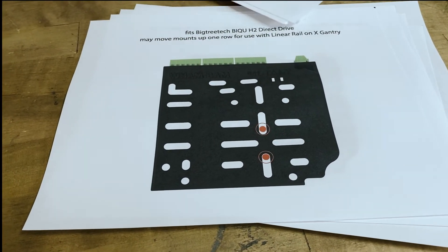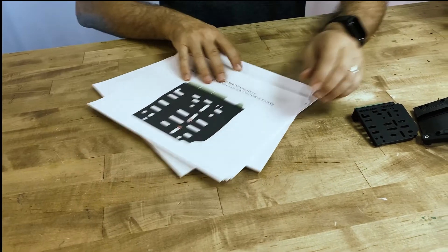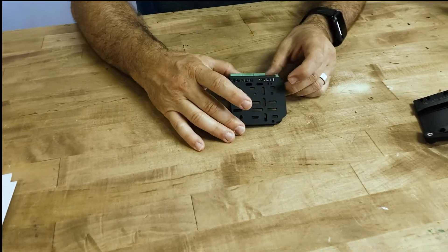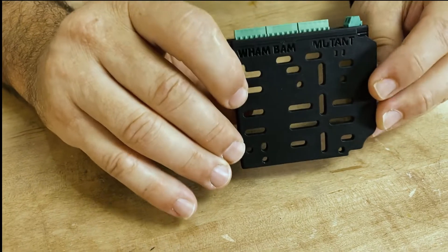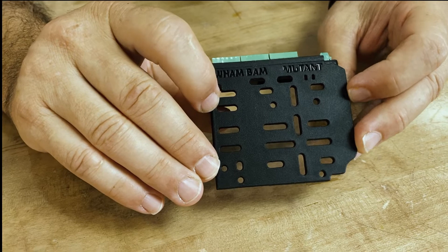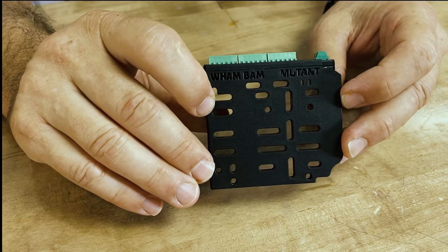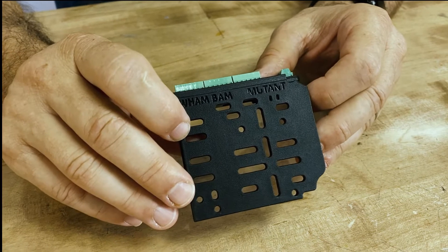Besides natively screwing directly to the Mutant, we have packets and packets of downloadable files that will be available on the website. There's also a whole slew of 3D models to mount specific custom ductwork, tool heads, and accessories made by many of our beta testers. We're looking forward to the community growth of models for different tool supports.